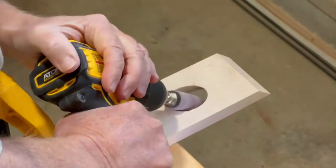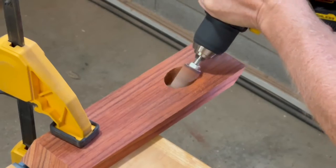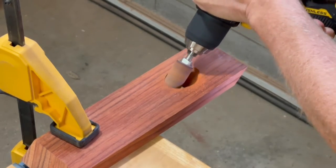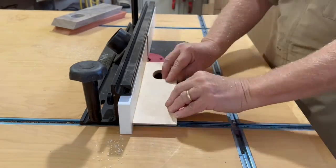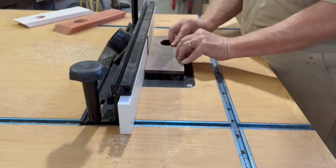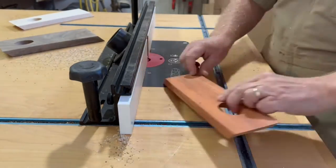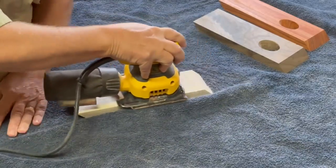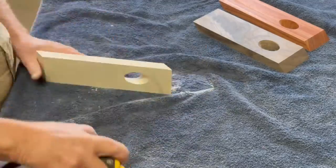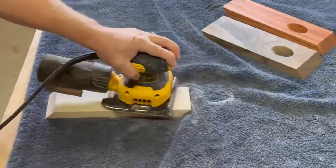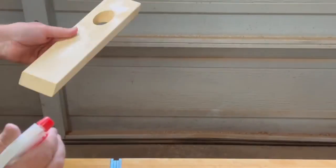I'm using this little sanding attachment for my drill to smooth out the inside of the hole since the hole saw left them a little rough. Then making use of the router table I put a small round over on all of the edges.